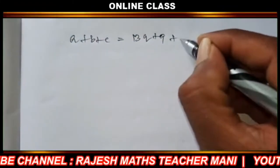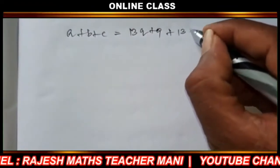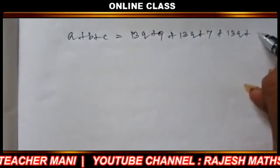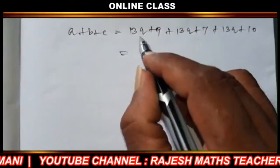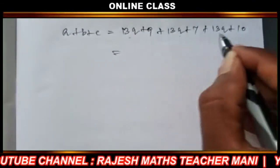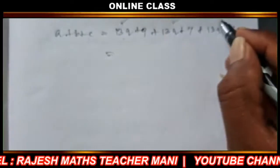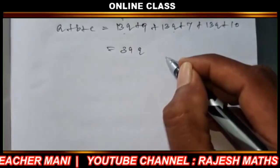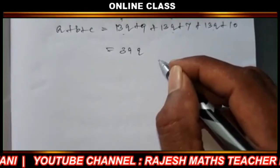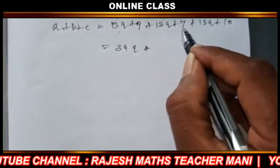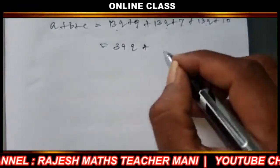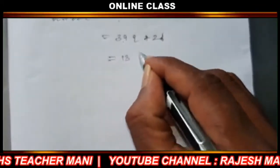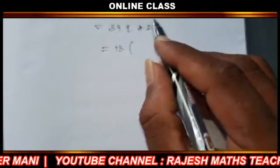So here we go. a plus b plus c is equal to 13q plus 9, plus 13q plus 7, plus 13q plus 10. Adding equations 1 plus 2 plus 3, we get 39q plus 9 plus 7 plus 10, which equals 39q plus 26.